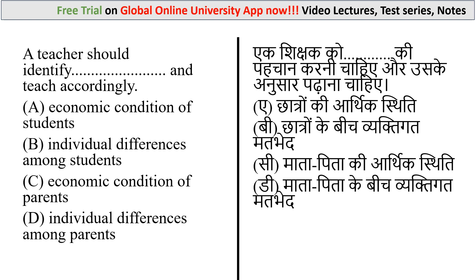The correct answer is option B: a teacher should identify individual differences among students and teach accordingly. It is important for the teacher to know variables such as physical characteristics, intelligence, perception, gender, ability, and learning style, which are the individual differences of the learner. An effective and productive teaching-learning process can be planned by considering these individual differences.